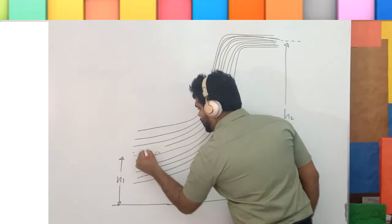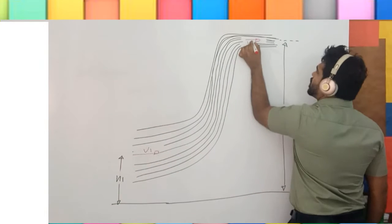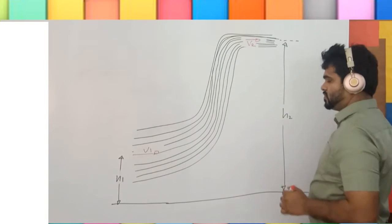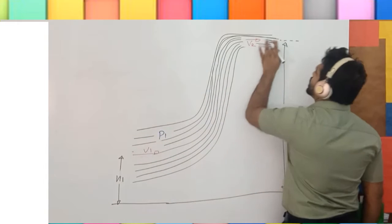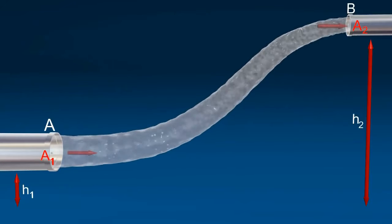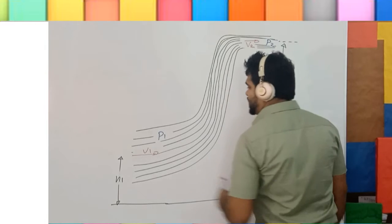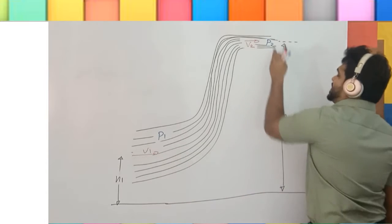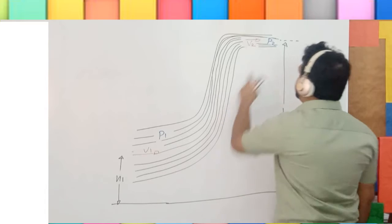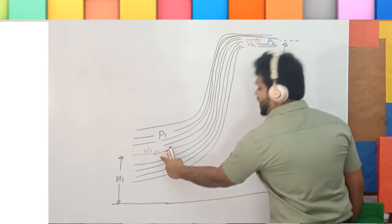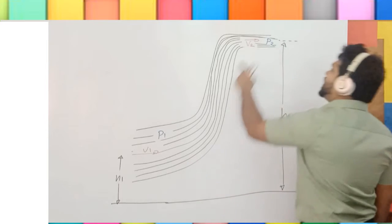Velocities v1, v2. Pressure p1, p2. While flowing, the cross section has decreased. According to the continuity equation, velocity v2 is greater than v1, so does the kinetic energy per unit volume.